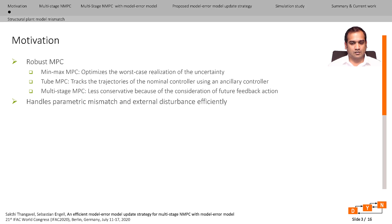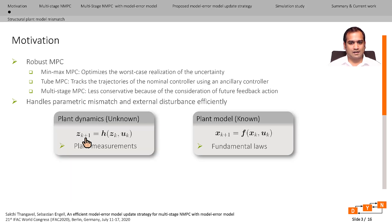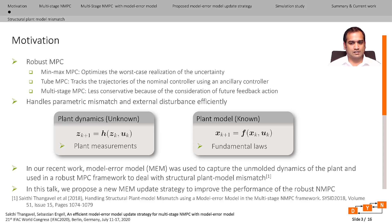These robust controllers handle disturbances and parametric mismatches present in the nominal model of the plant quite efficiently. Normally, the true plant dynamics are given by equations that are unknown, and what we know from the plant are the measurements we obtain. More often, there exists a structural plant model mismatch between the true plant model and the nominal model. Handling such structural plant model mismatch is still an open area of research. Robust NMPC approaches capture the plant model mismatch as an additive disturbance, but we showed that these schemes are in general very conservative and can be improved using a model error model to capture the plant model mismatch.